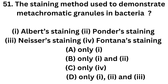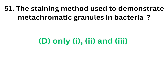Question number 51. The staining method used to demonstrate metachromatic granules in bacteria. 1. Albert staining. 2. Ponder staining. 3. Nacer staining. 4. Fondana staining. Option A: Only 1. Option B: Only 1 and 2. Option C: Only 4. Option D: Only 1, 2 and 3. The correct answer is Option D — Only 1, 2 and 3.